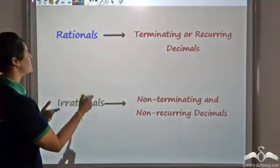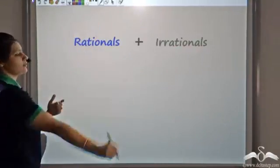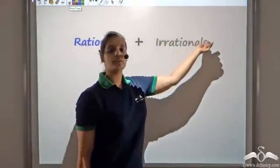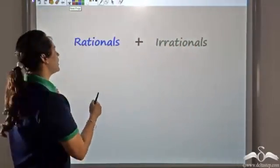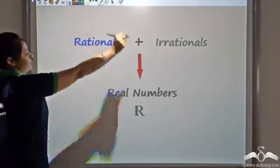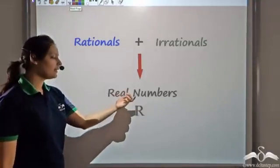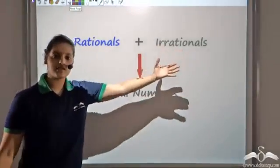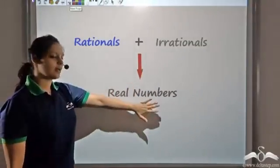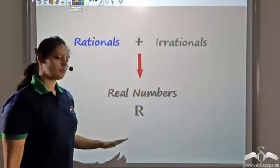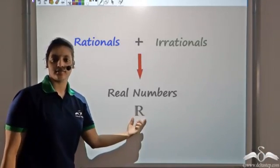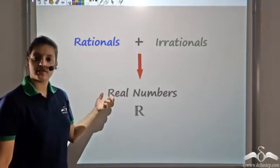Now rationals plus irrationals. So I have a number system - I initially had rationals. Now what I do is I include the irrationals to my system and what I get is real numbers. Real numbers is the collection of all numbers which are rationals and irrationals. I represent this set by the capital letter R. So this is how I represent real numbers.